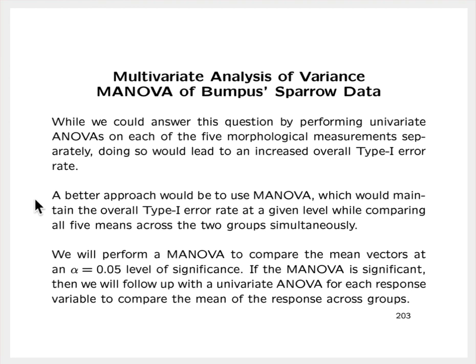A better approach would be to use MANOVA, which would allow us to maintain the overall type 1 error rate at a given level — say 5% — while comparing all five means across the two groups simultaneously. That's one of the big reasons why we would consider using multivariate analysis of variance: we can perform all of the comparisons simultaneously and control the overall type 1 error rate at a given level, for example 5%.